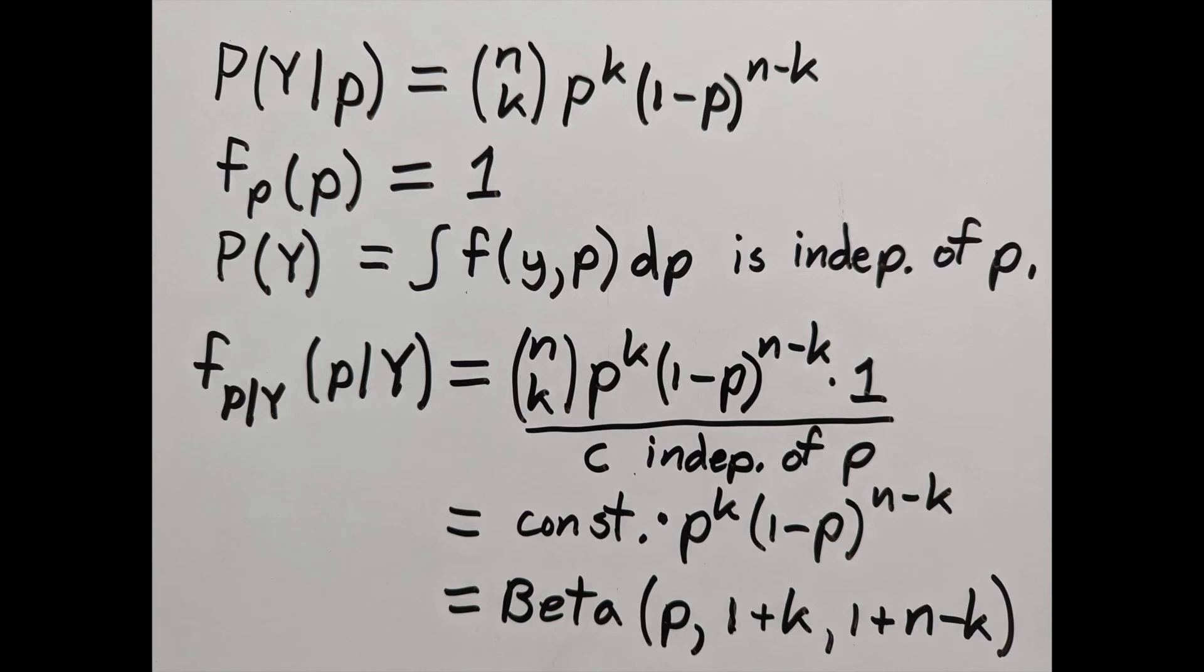Therefore we're looking at a beta distribution with parameter p, 1 plus k, and 1 plus n minus k. So starting with a uniform distribution for prior estimate, we end up with a beta distribution based on the data.